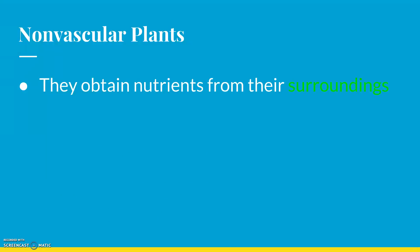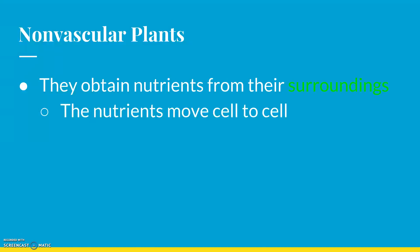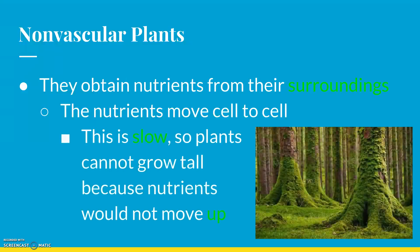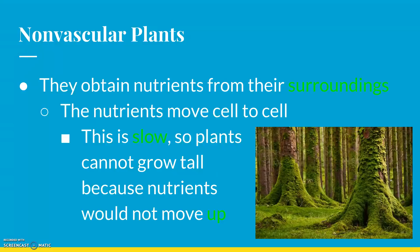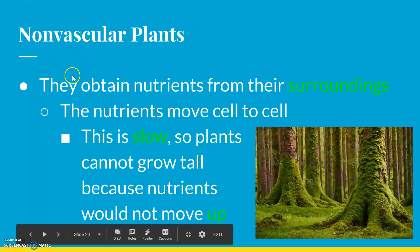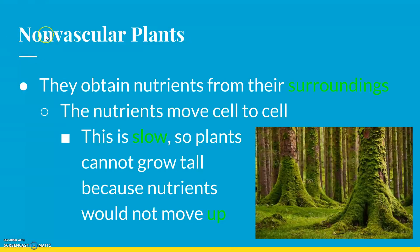They do obtain nutrients and water from their surroundings, but nutrients just move from cell to cell — it kind of passes right on down the line. This process is very slow, so plants can't grow tall. Non-vascular plants are very short because they don't have vascular tissue. Think of a non-smoking section — that means no smoking. So non-vascular means no vascular; they don't have those tubes.